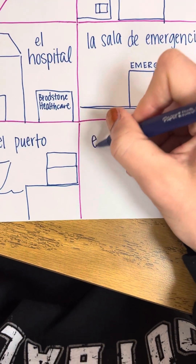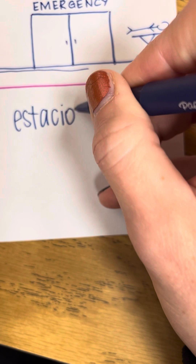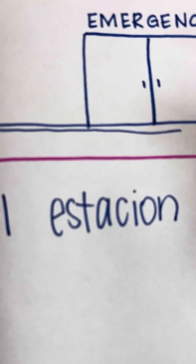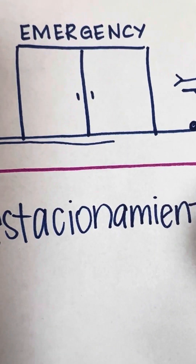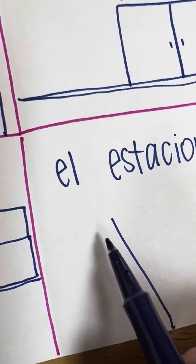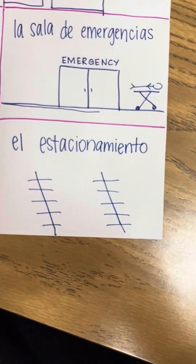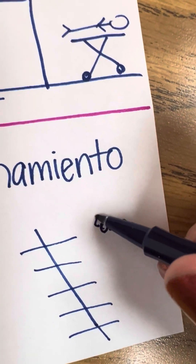And then our last one, we're going to draw a parking lot. It's a super long word — it's singular and masculine: el estacionamiento. E-S-T-A-C-I-O-N-A-M-I-E-N-T-O. El estacionamiento. We're just going to draw the aerial view of lines in a parking lot, and then maybe draw a little car so you know what all these lines are for.